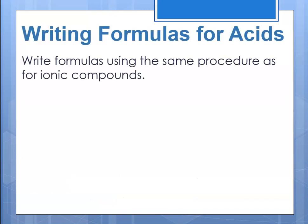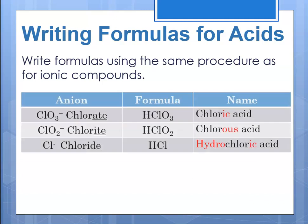To write formulas for acids, we use the same basic procedure as for ionic compounds. If you're given chloric acid, you'd know it comes from the chlorate anion, which has a charge of minus one. So the correct formula would be HClO₃.